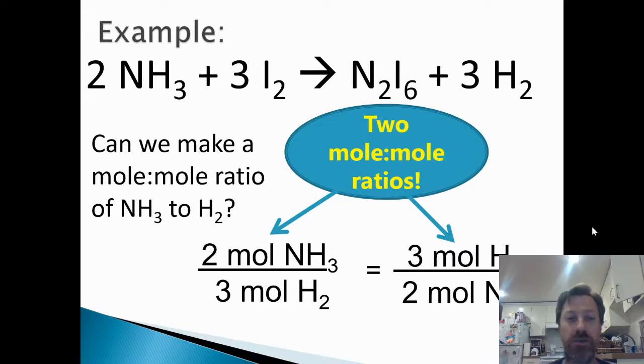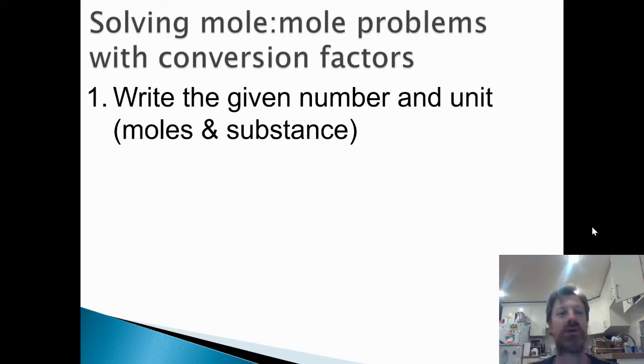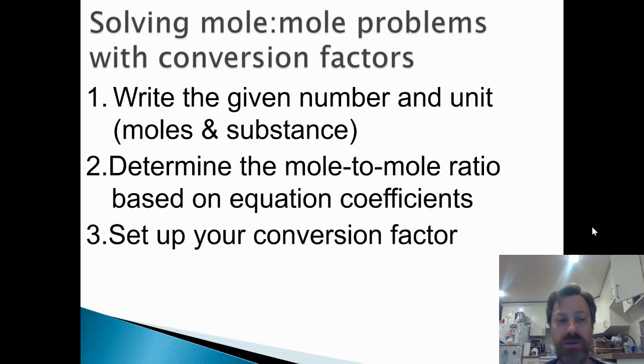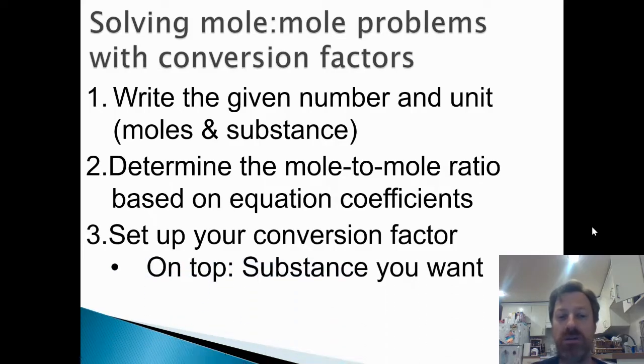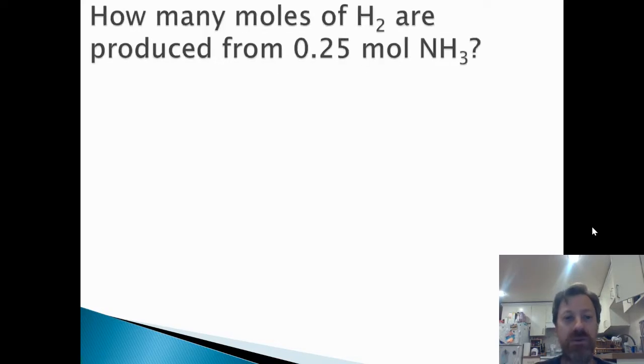So this is really useful because now we can use it to solve problems. So let's go to our first example here. Actually, before we go to our example, let's go to our steps. First, we're going to write the given number in unit. Notice that's going to be the first thing you do pretty much always. You're going to write what the problem gives you. And here the unit is just both going to be moles. And importantly, it's going to be the substance. So if you're starting out with moles of H2O, it's important to write moles of H2O. You're starting out with moles of N2, write moles of N2. Number two, determine the mole to mole ratio based on the balanced equation coefficients. And three, set up your conversion factor. What do we want? On top is the unit you want, the substance you want. And on the bottom is the substance you need to cancel out. Of course, then you can do your math.